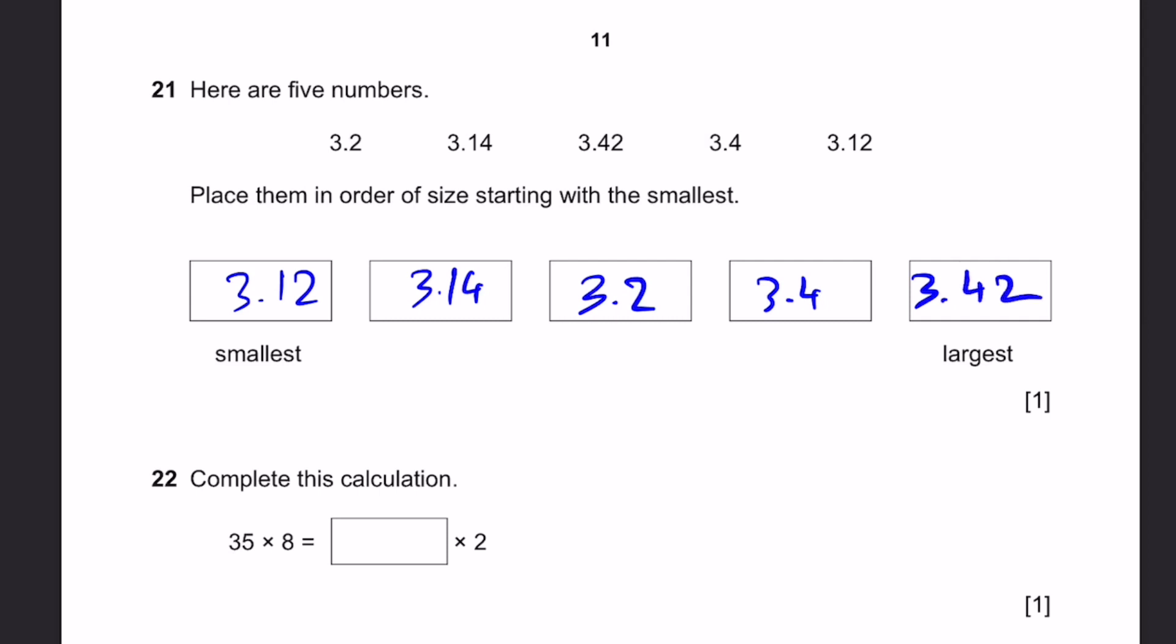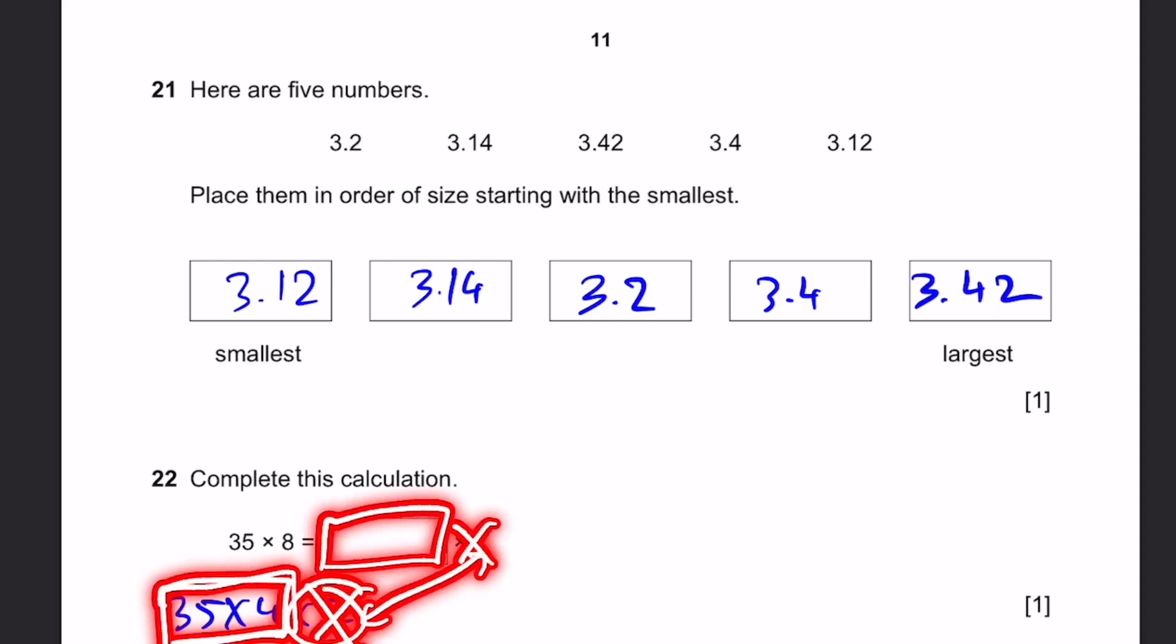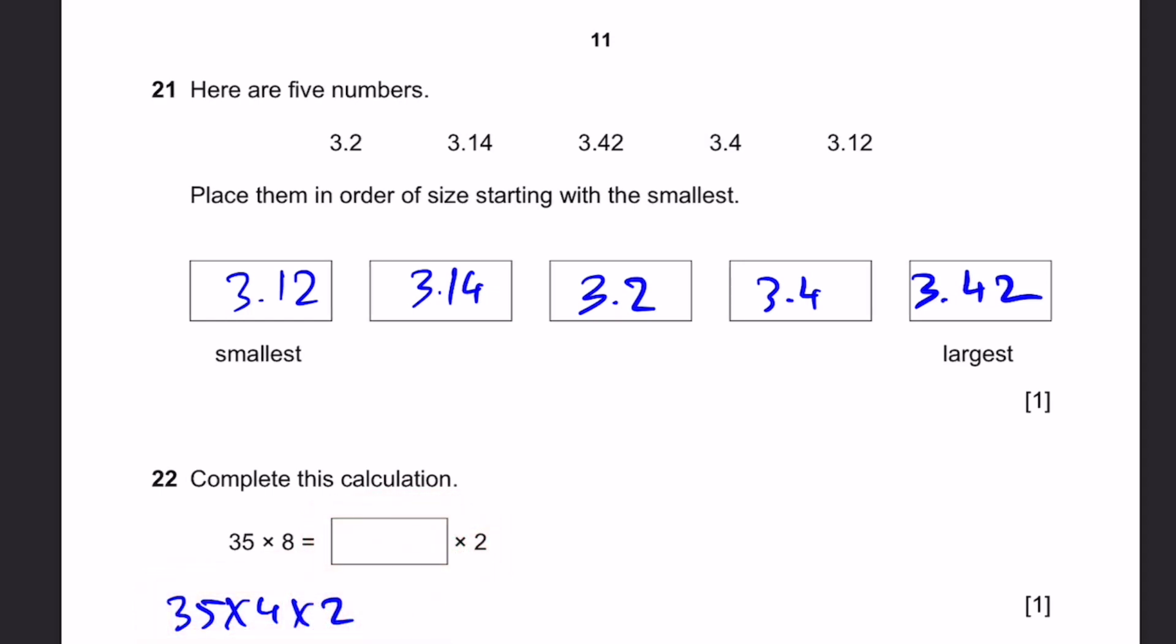Question 22. Complete the calculation. 35 into 8 is dash into 2. So 35 into 8 is simply 35 into 4 into 2. This will be dash into 2, 35 into 4 into 2. So this will be given, you can cancel that out. The remaining is 35 into 4, which equals 140.